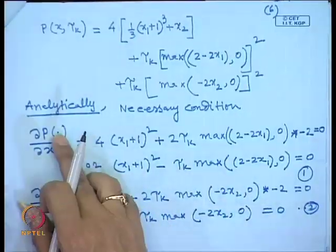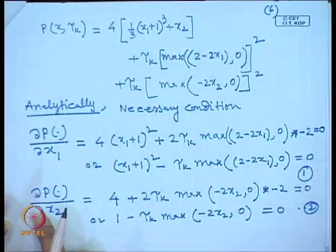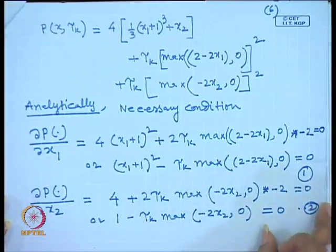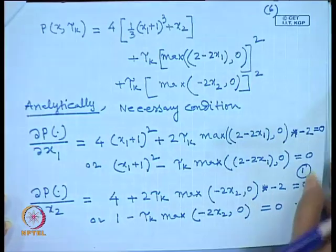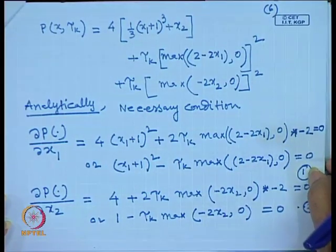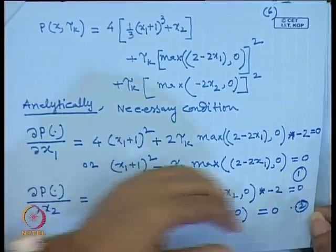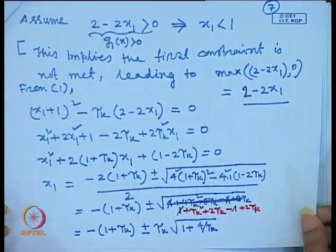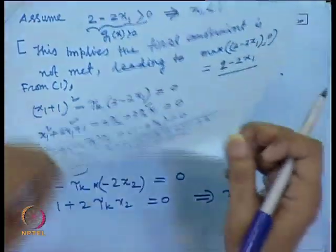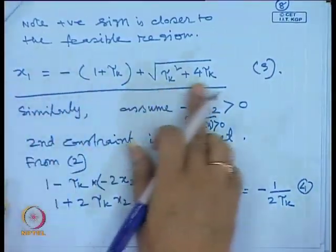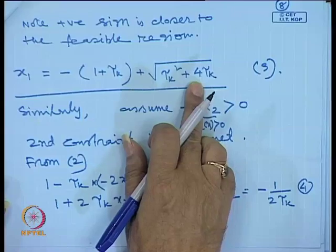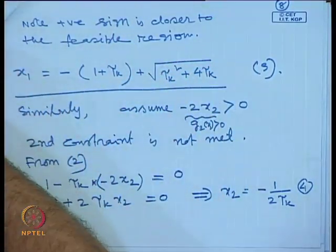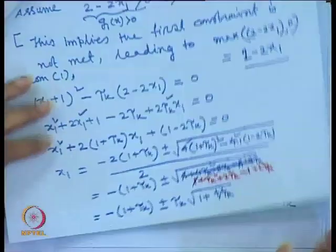After solving the detail expressions for equations 1 and 2, we get a set of two simultaneous equations. Solving these gives x₁ in a closed-form expression. We must take the proper sign when finding roots of the quadratic equation, since x cannot be negative due to the feasible region constraints — the positive sign must be considered.